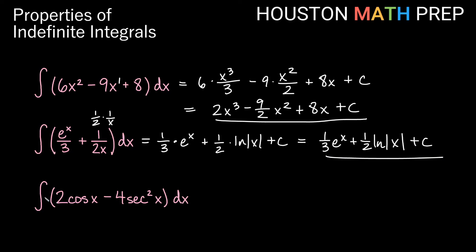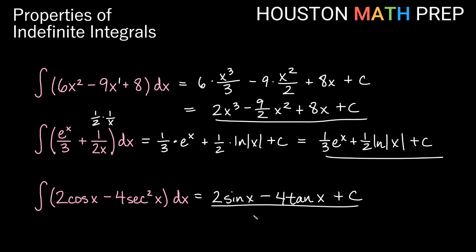Looking at our last one, a little bit of trig: the antiderivative of 2 cosine x minus 4 secant squared x dx. Keep the constant multiple of 2; the antiderivative of cosine x is sine x, giving 2 sine x. Minus, keep the constant multiple of 4; the antiderivative of secant squared x is tangent x, because tangent x has a derivative of secant squared x. So we get 2 sine x minus 4 tangent x plus c. Good luck with your constant multiples — take it one term at a time. Thanks for watching!